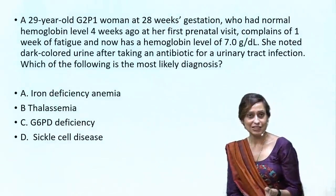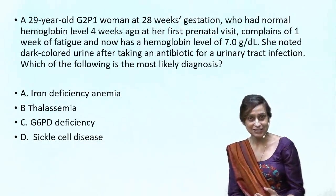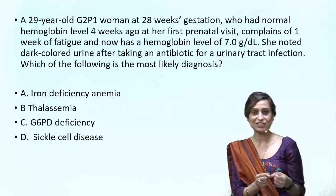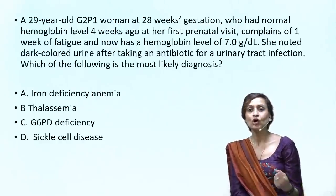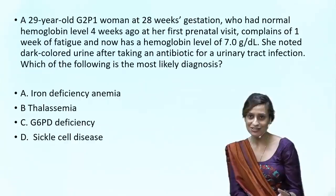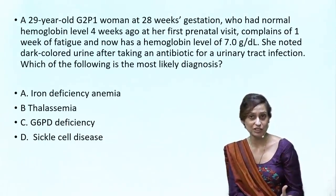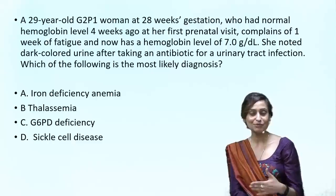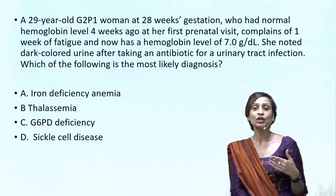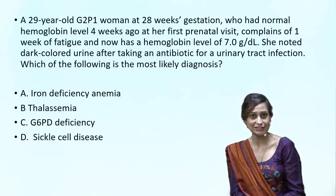How do we rule out thalassemia or sickle cell disease? Thalassemia major or intermediate traits would manifest even prior to pregnancy — she would be a known case. Only traits would have mild anemia, usually hemoglobin above 10 gram percent, with some deficit and evidence of microcytosis on peripheral smear. In this patient, previous reports were all normal. Also, hemoglobin electrophoresis is a baseline investigation done during antenatal checkup.